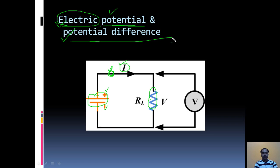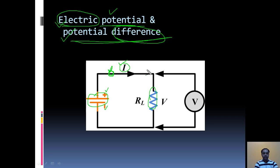Now, potential difference — what do you mean by difference? Difference means a certain change between any two points. Suppose I want to measure the energy difference between this point and this point. Suppose this point is point A and this point is point B. The energy difference between point A and point B is known as potential difference.